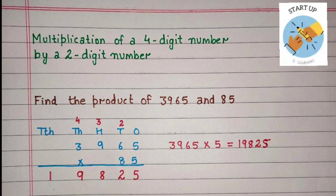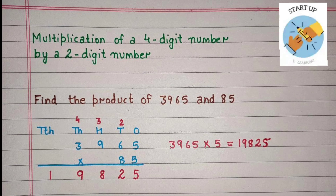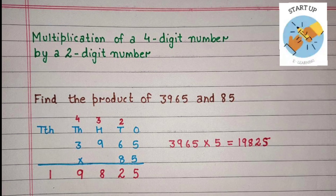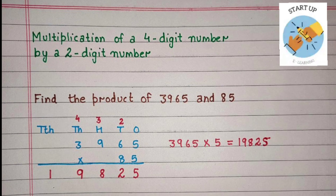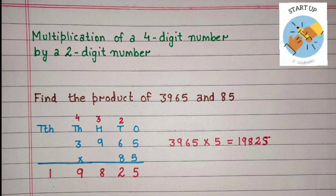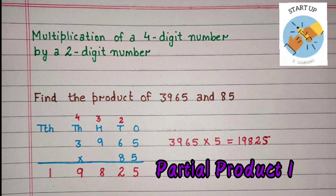5 will be multiplied by 3, the digit at the 1000's place. 5 threes are 15, plus 4 carried over equals 19. 9 will be written under the 1000's place and 1 will be written under the 10,000's place. So when we multiply 3,965 by 5, we get partial product 1, which is 19,825.